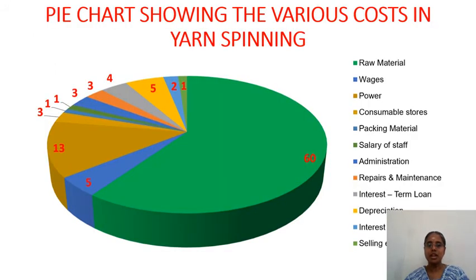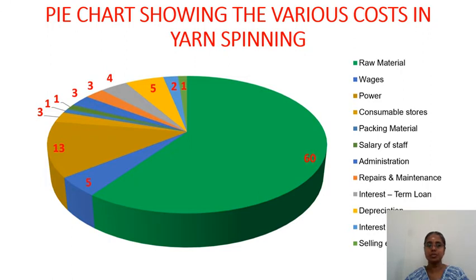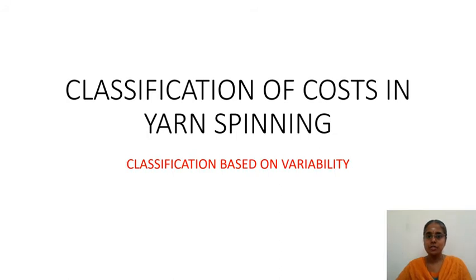The same information is shown in a pie chart for a spinning mill producing combed yarn: 60% is raw material cost, 13% is power, and there is higher depreciation in that mill. Interest can be very high depending on borrowing rates. The pie chart clearly shows the various components of cost in the spinning mill.